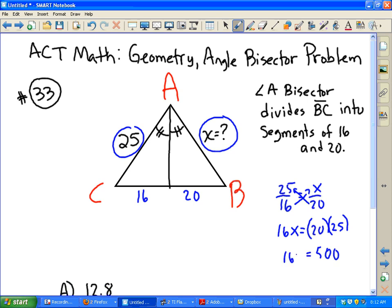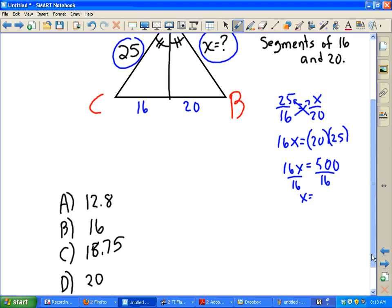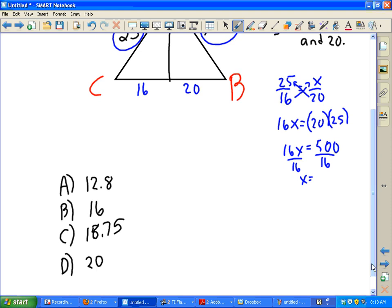16X equals 500. If you divide by 16, it looks like X is going to be 31 and a quarter. And it's not there. So maybe we did this incorrectly. Let's go ahead and switch these around.